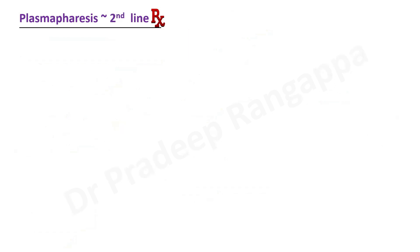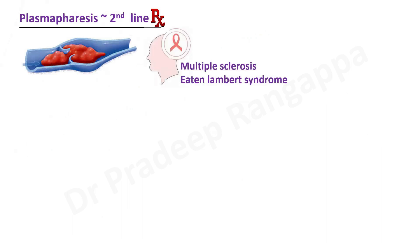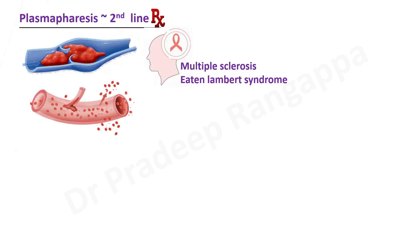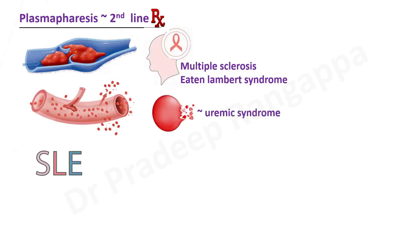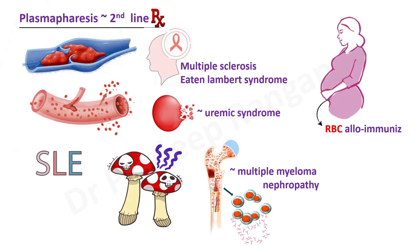There are certain conditions where plasma apheresis is used as a second line. Catastrophic antiphospholipid antibody syndrome, a thrombotic state with arterial and venous thrombi, is second-line. Others include multiple sclerosis, Eaton-Lambert syndrome, vasculitis due to severe autoimmune conditions, hemolytic uremic syndrome, SLE, some mushroom poisonings, multiple myeloma-associated nephropathy, and RBC alloimmunization in pregnancy.